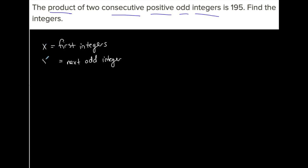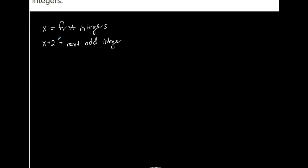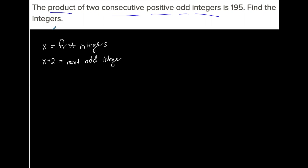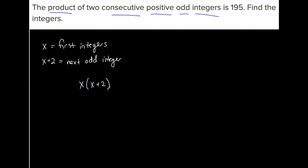If X represents the first integer, then to get to the next odd integer I would say X plus two. Now I have my two integers represented in variable form. I want their product, so I have X as the first integer and X plus two as the next odd integer.